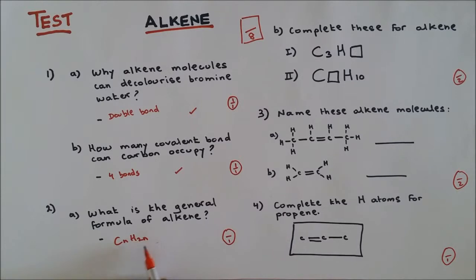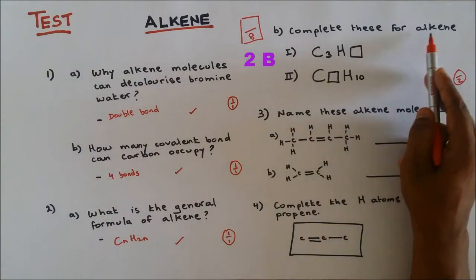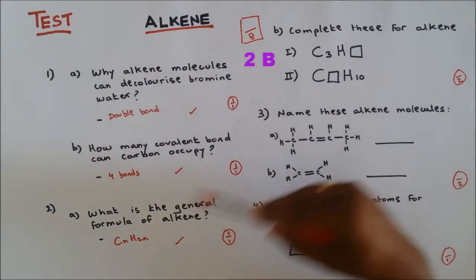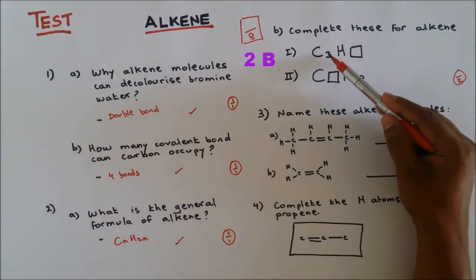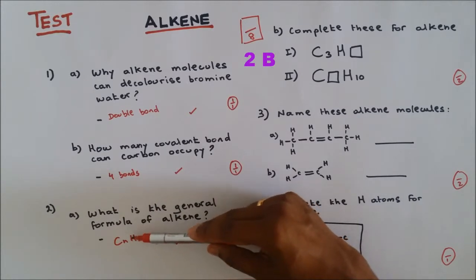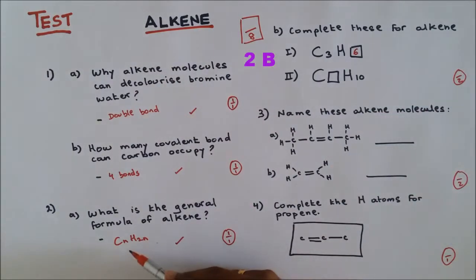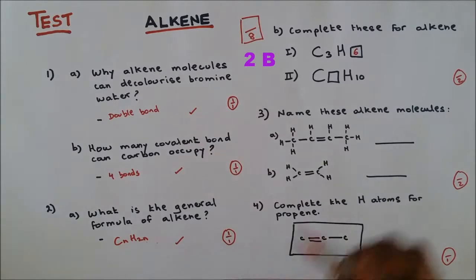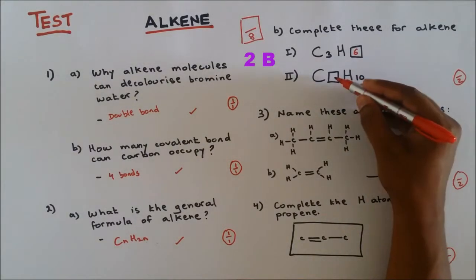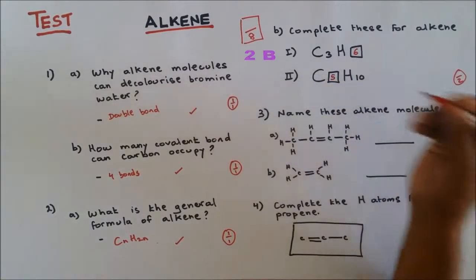Question 2b: Complete these for alkene. Using the general formula, we can complete this. There's three carbon here. If it's three carbon, the hydrogen is just double for alkene, so this one is six, because this one is 2n. Now hydrogen is 10 here, so obviously carbon has to be the half of it, so this is five.